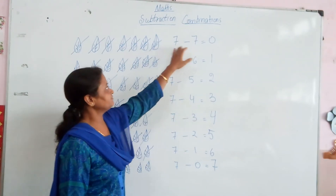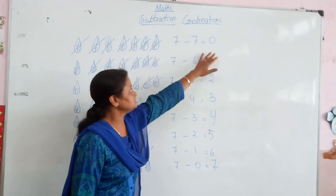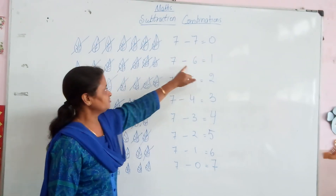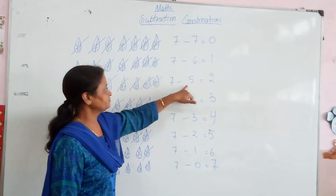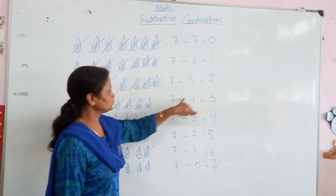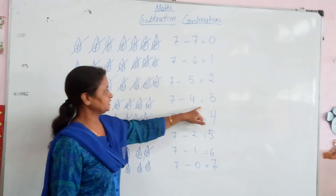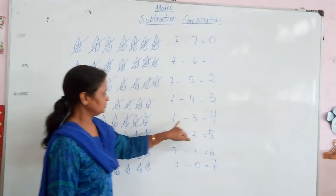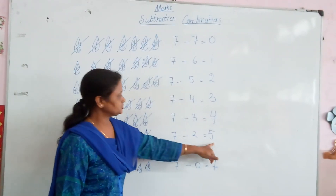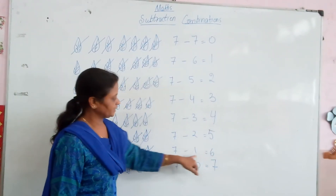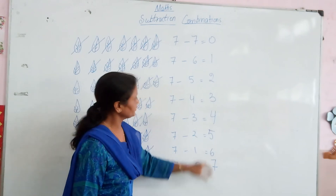Okay? 7 minus 7 is 0. 7 minus 6 is 1. 7 minus 5 is 2. 7 minus 4 is 3. 7 minus 4 is 4. 7 minus 5 is 2. 7 minus 4 is 3.